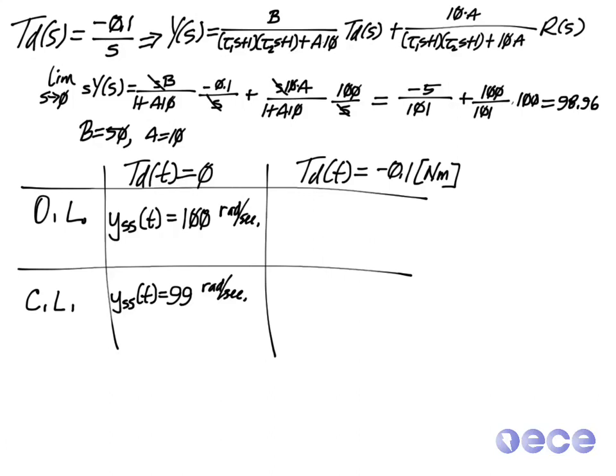So we have a little bit of steady state error, but it's pretty close. So we can trade that off with the rejection of the disturbance now, and see that the steady state case for a disturbance of minus 0.1 for open loop is 5%. So we have 5% steady state error.